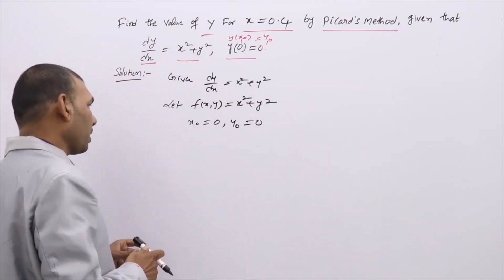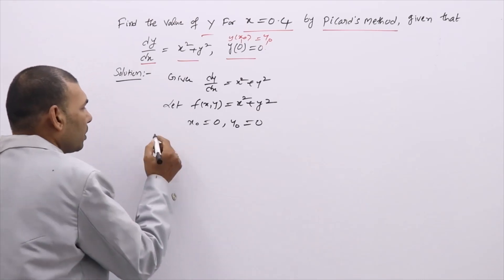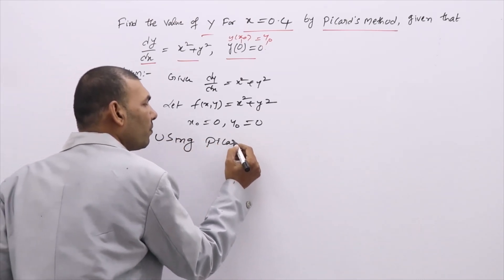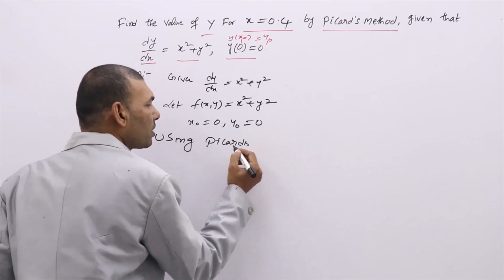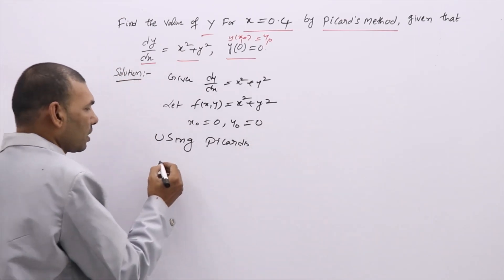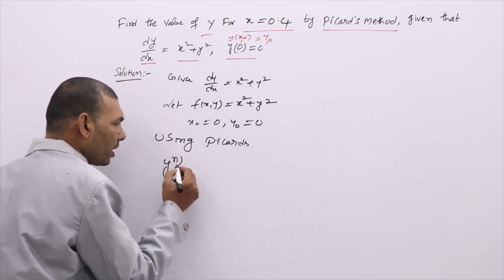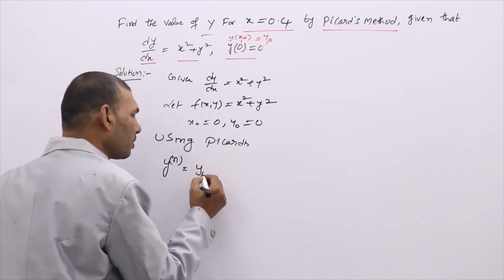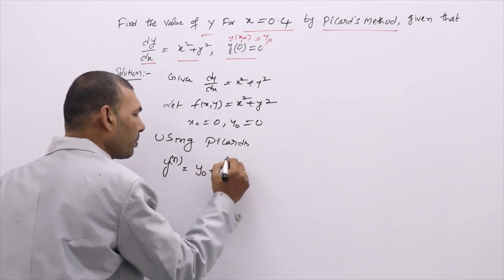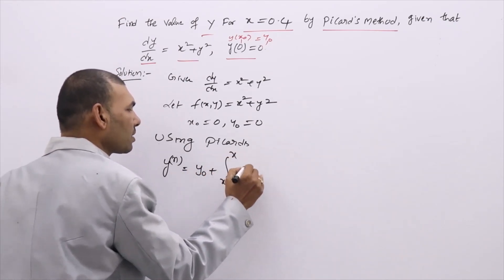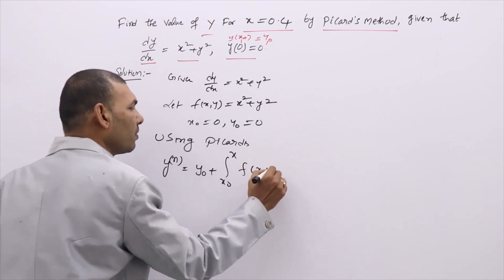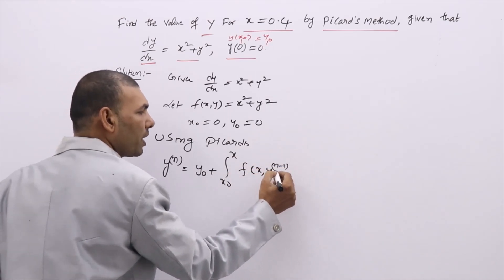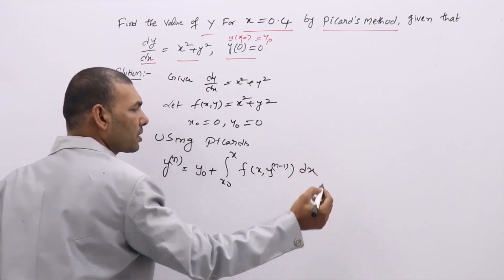Now we will use Picard's method. The formula for successive approximations is: the nth approximation y_n equals y₀ plus the integral from x₀ to x of f(x, y_{n-1}) dx.